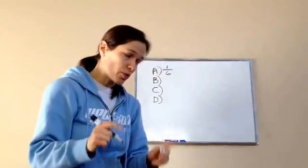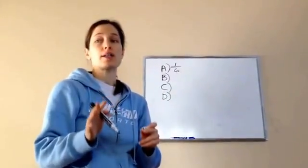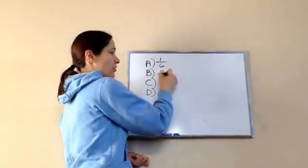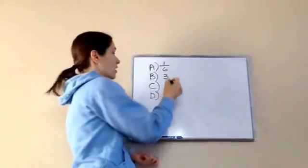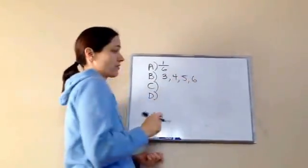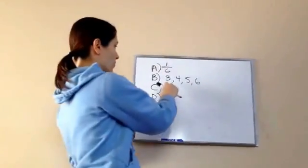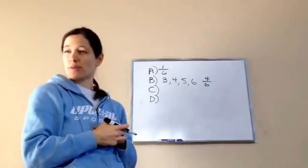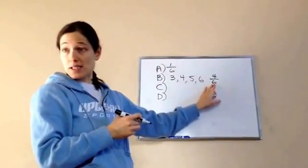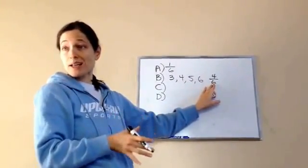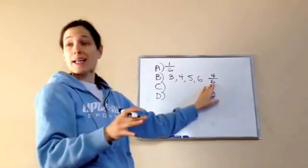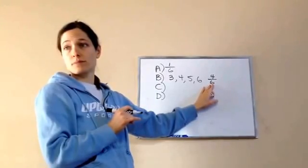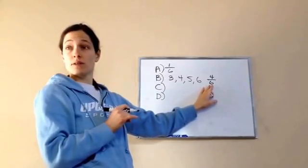Let's try this next one. That the cube will stop with more than two dots on top. So, what is more than two? More than two is a three, a four, a five, and a six. So, what are our chances? One, two, three, four out of six dots. You get what I'm doing? So, is this impossible, less likely, half and half, more likely, or absolutely certain? Probably less likely.